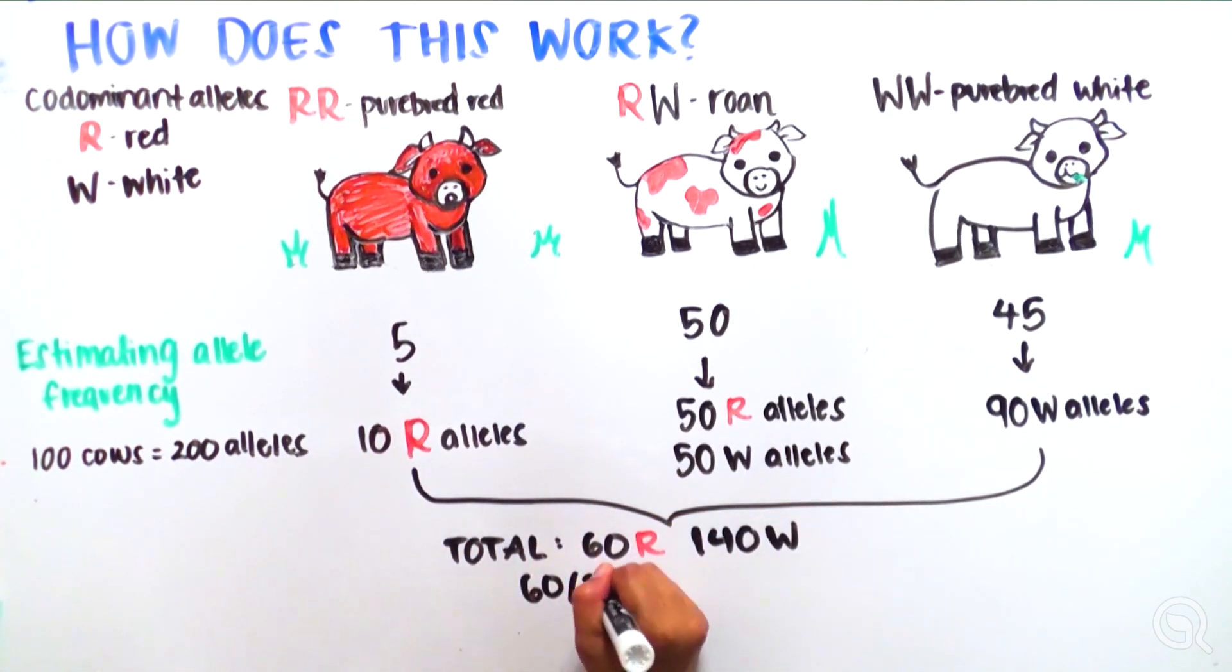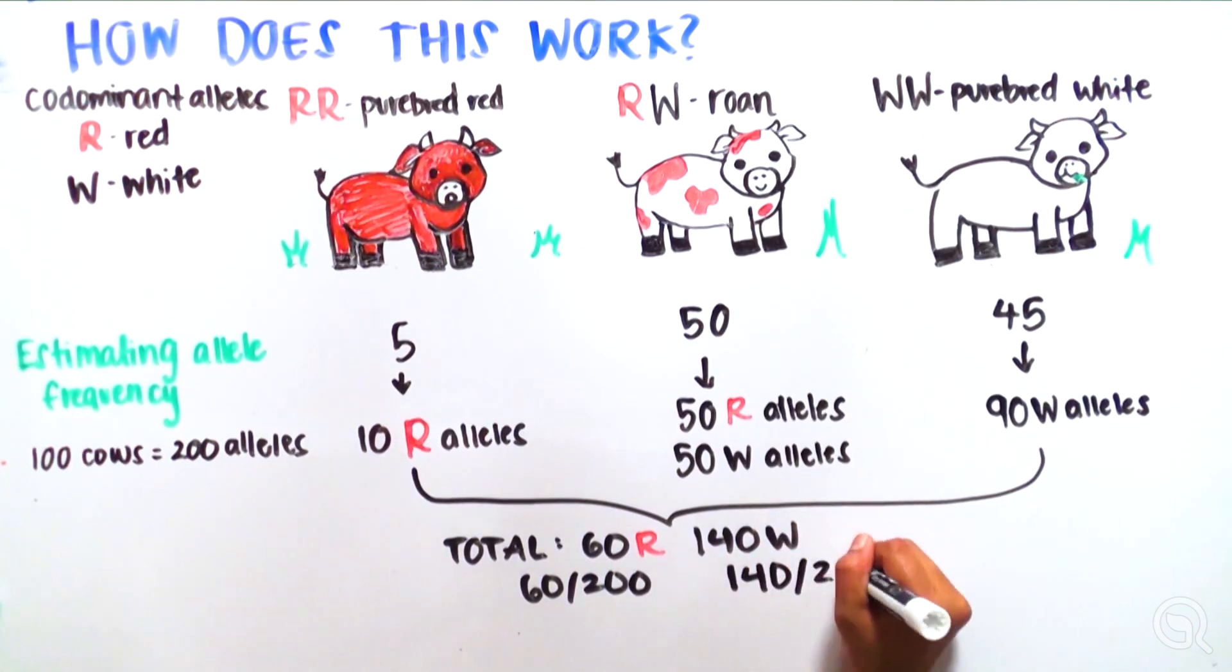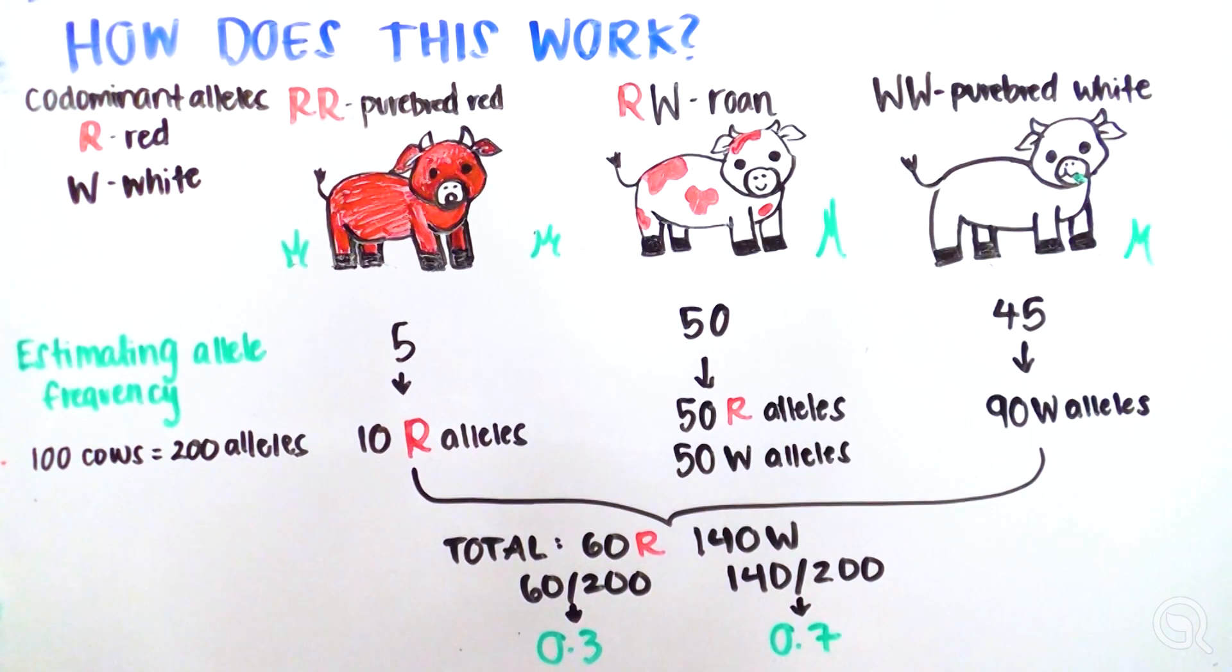This gives us a total of 60 R alleles and 140 W alleles. We would then calculate that 60 alleles in a gene pool of 200 (60/200) equals an R allele frequency of 0.3. With 140 W alleles in a pool of 200 alleles (140/200), the frequency of W is 0.7. Notice that the total of the frequency of R plus the frequency of W equal 1.